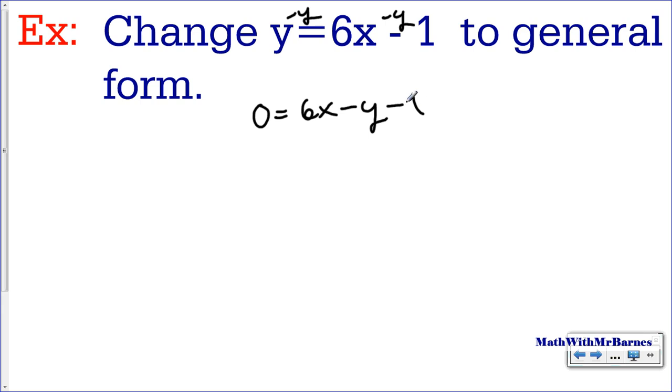So I end up with 0 equals 6x minus y minus 1. Believe it or not, that is general form right there. The only thing my students absolutely hate is having the 0 on the left side, so they like to just reverse it to make it look like ax plus by plus c.